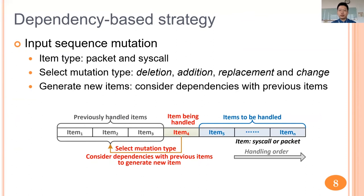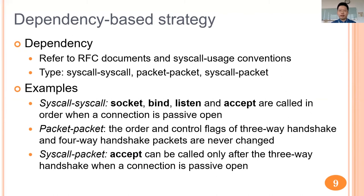We first introduce our dependency-based strategy. An original input sequence consists of several items, which are syscalls and packets. Our strategy mutates it to generate new input sequences. For each item in the original input sequence, our strategy first selects a mutation type — including deletion, addition, replacement, and change — then mutates this item by considering dependencies with previously handled items. We have implemented 15 dependency rules by referring to RFC documents and syscall usage conventions. There are three kinds of dependencies: syscall-to-syscall, packet-to-packet, and syscall-to-packet. For example, a packet-to-packet dependency rule is that the order and control flags of 3-way handshake and 4-way handshake packets are never changed.